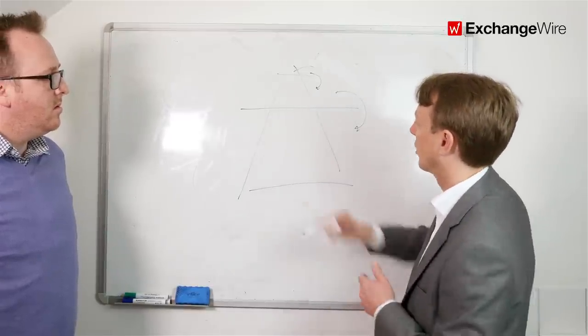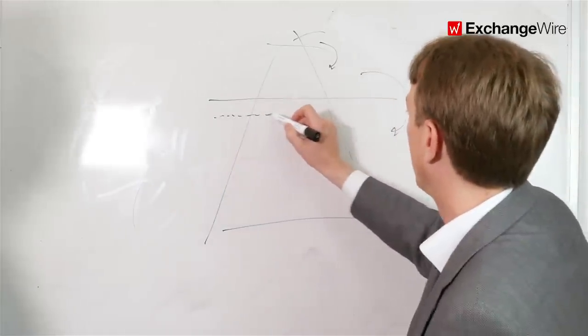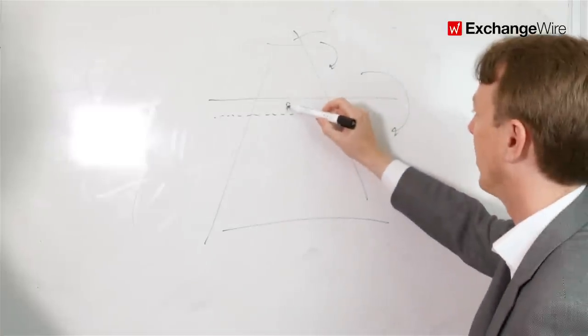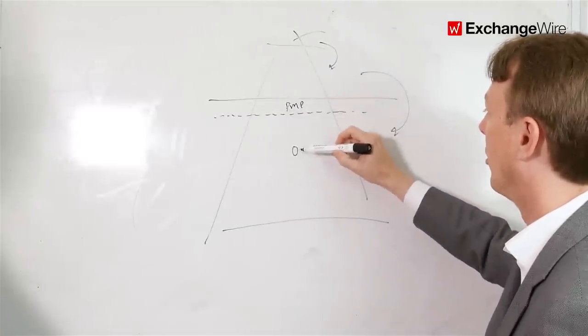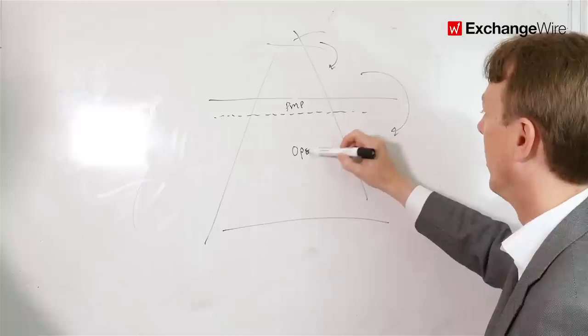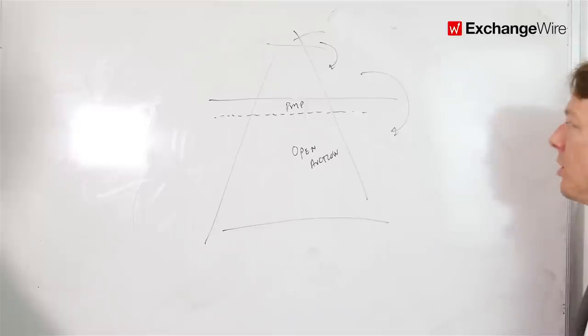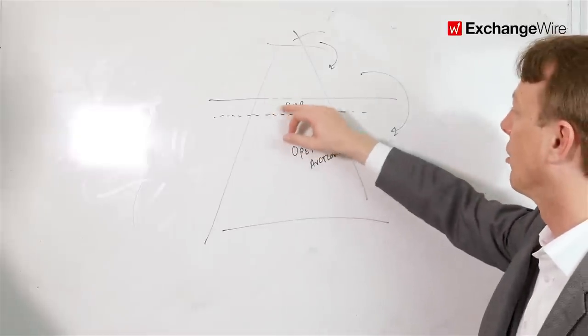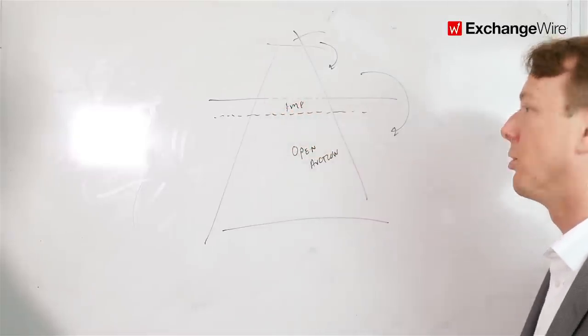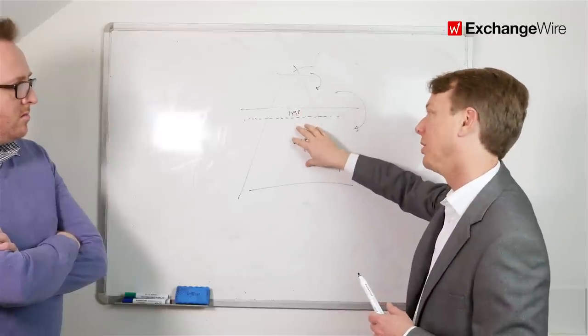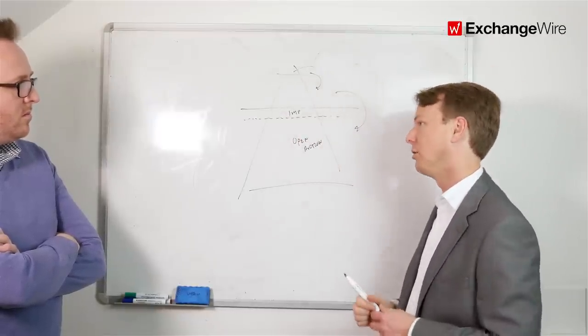Because if you look at kind of the way it traditionally works in terms of the non-guaranteed pot, you've got private marketplaces sitting up here and open auctions sitting down here. And so the concept and the construct here was, let's break down this wall here between what has historically been prioritized direct and allowed non-direct opportunities to compete against direct sold campaigns.